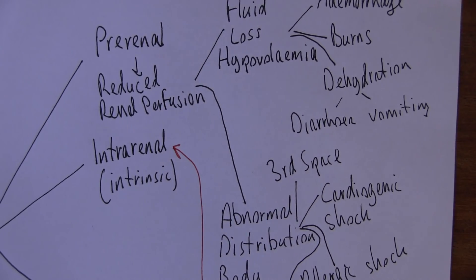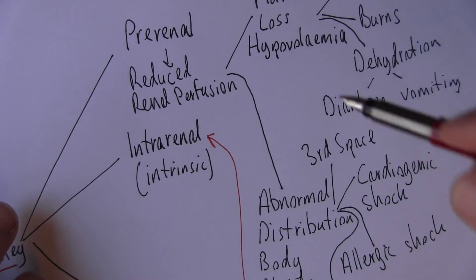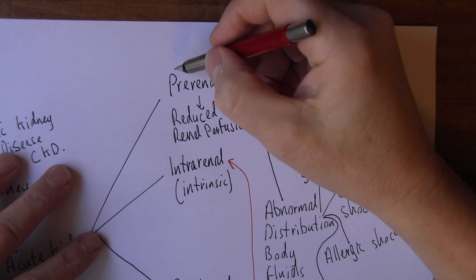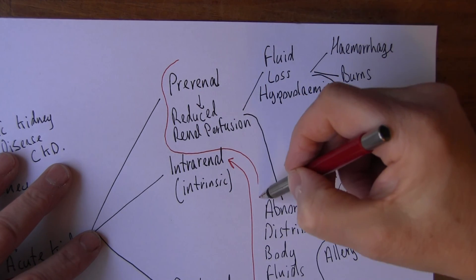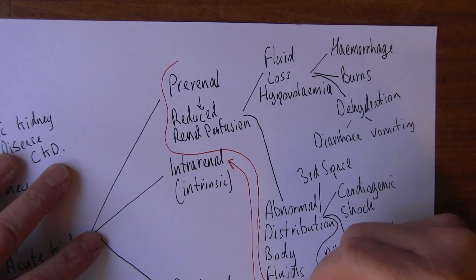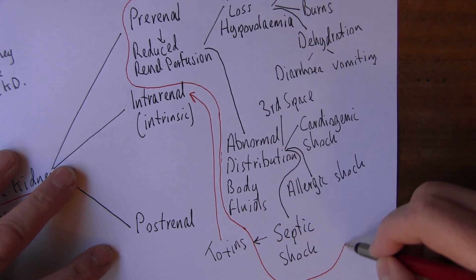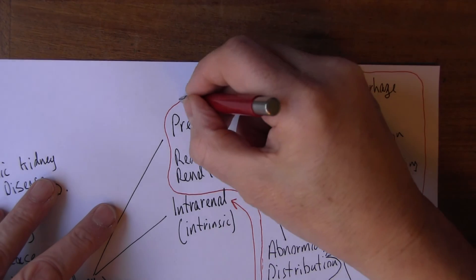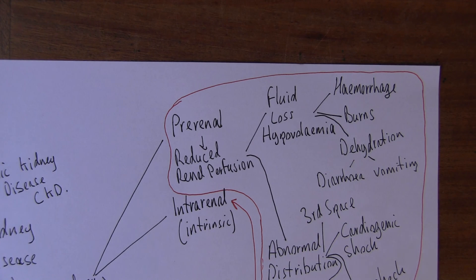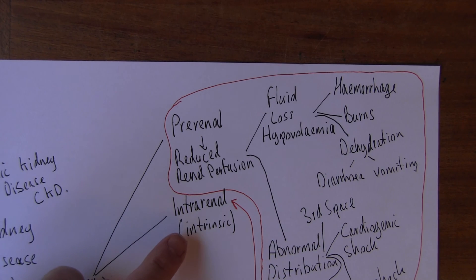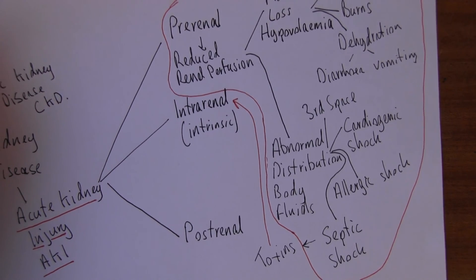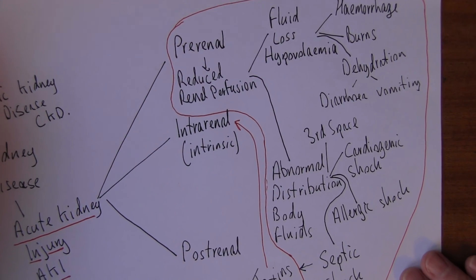So there we have prerenal causes. So these are all prerenal causes here. So we've got prerenal reduced perfusion and all of these things can be causes of prerenal failure. So to continue my mind map on another piece of paper, we now want to look at the intrarenal causes. So I think we'll pause briefly there, then we'll come back and look at the intrarenal causes.